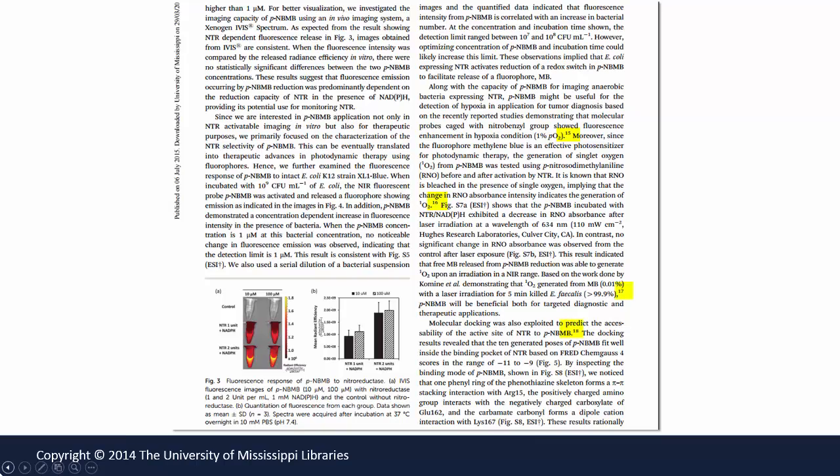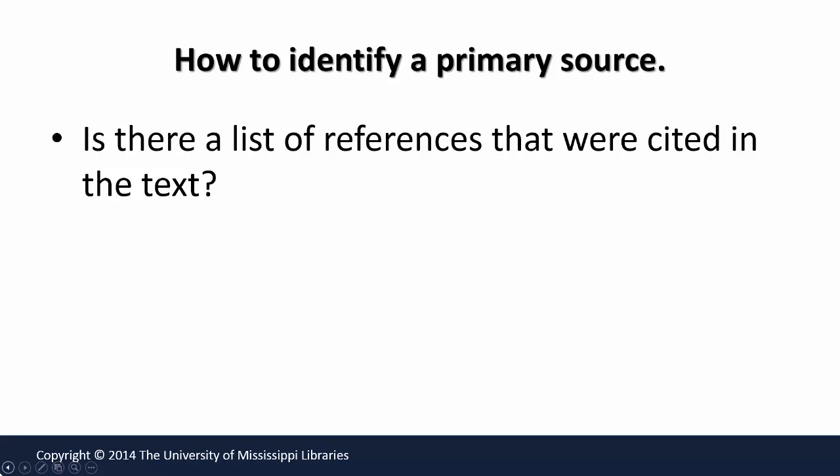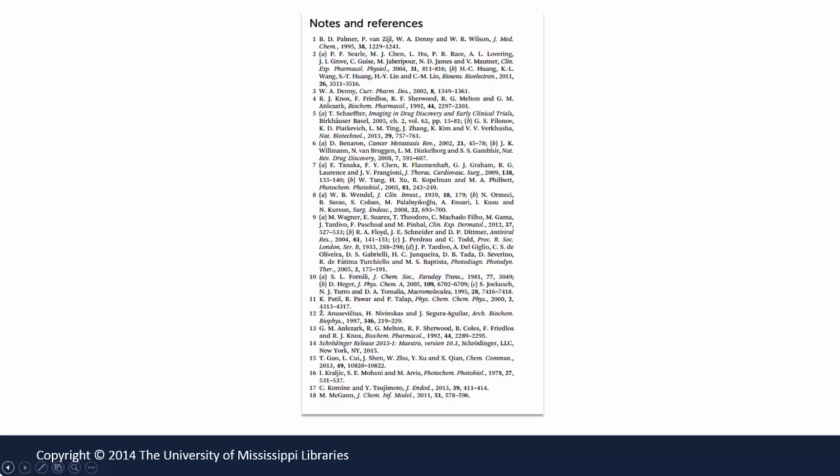These citations are indicated by the superscript numbers. Is there a list of references that were cited in the text? The authors list all of the references that they cited in the text. Note that the references are formatted in ACS style. Because you have already watched the tutorial on citations, you should be able to understand how to read these.